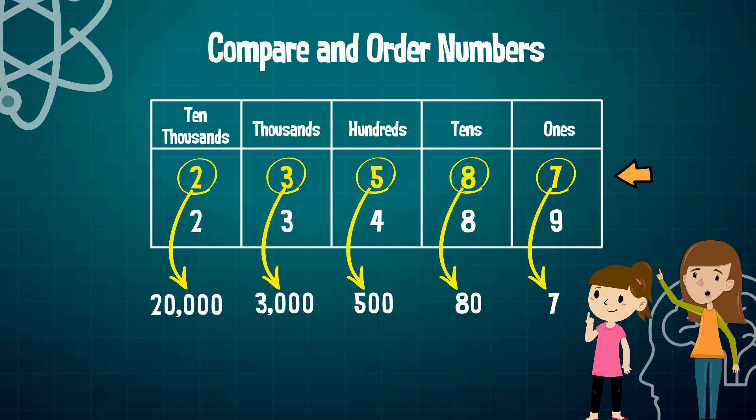If I take each of the values within this number, I can represent it in an expanded form as 20,000 plus 3,000 plus 500 plus 80 plus 7. Does this make sense?